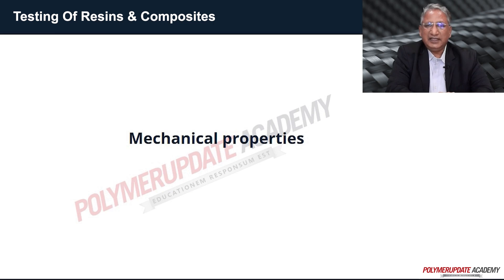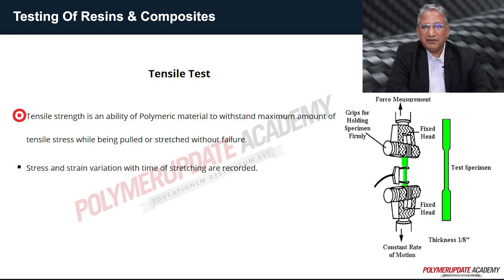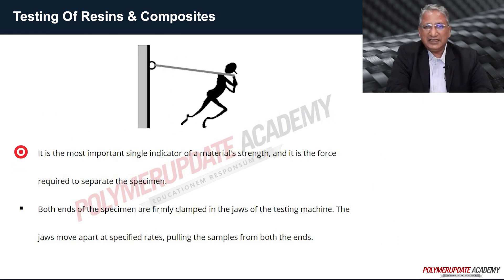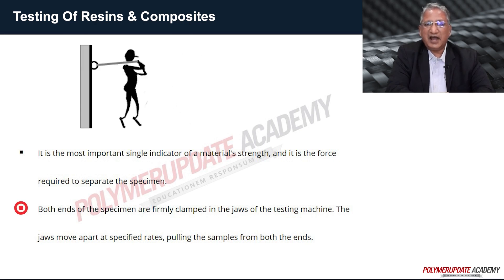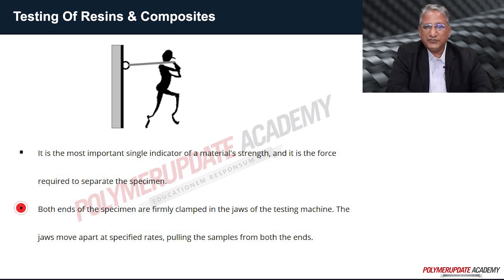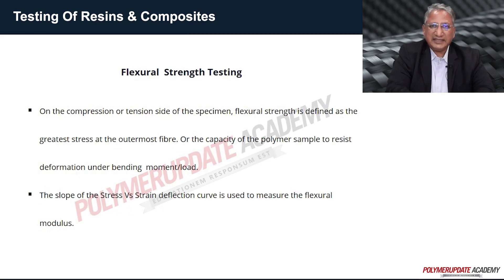An important part of composite testing is mechanical properties. The first test is tensile strength — the ability of a polymeric material to withstand the maximum amount of tensile stress while being pulled or stretched without failure. Stress and strain variation with time of stretching are recorded. Both ends of the specimen are firmly clamped in the jaws of a testing machine, and the jaws move apart at a specified rate pulling the sample from both ends.